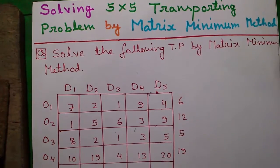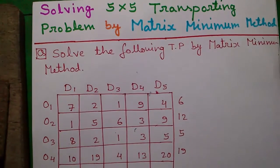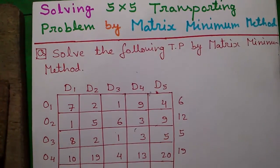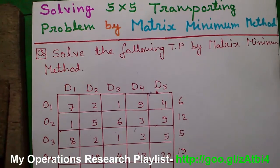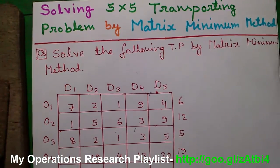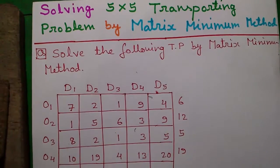Hi friends, I am Sujoy and today I will tell you how to solve a 5 plus 5 jumbo transportation problem by matrix minimum method. I have individual videos on how to solve a transportation problem by matrix minimum method, northwest corner method, and Vogel's approximation method. You can get all those videos in the playlist below. The link to the playlist is given in the video description below. So for now let's solve it — today I thought to try a harder problem which will clear your concepts.